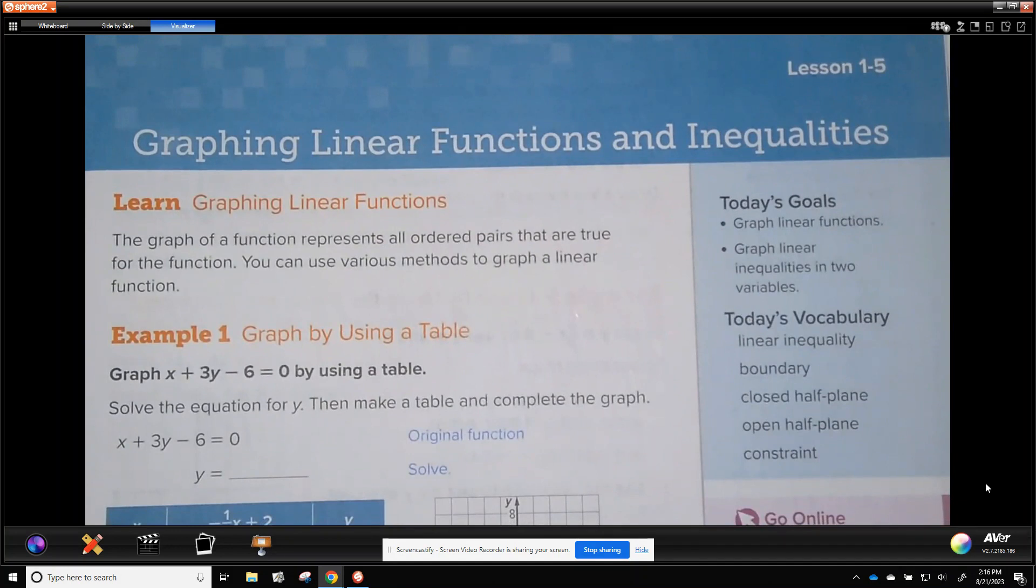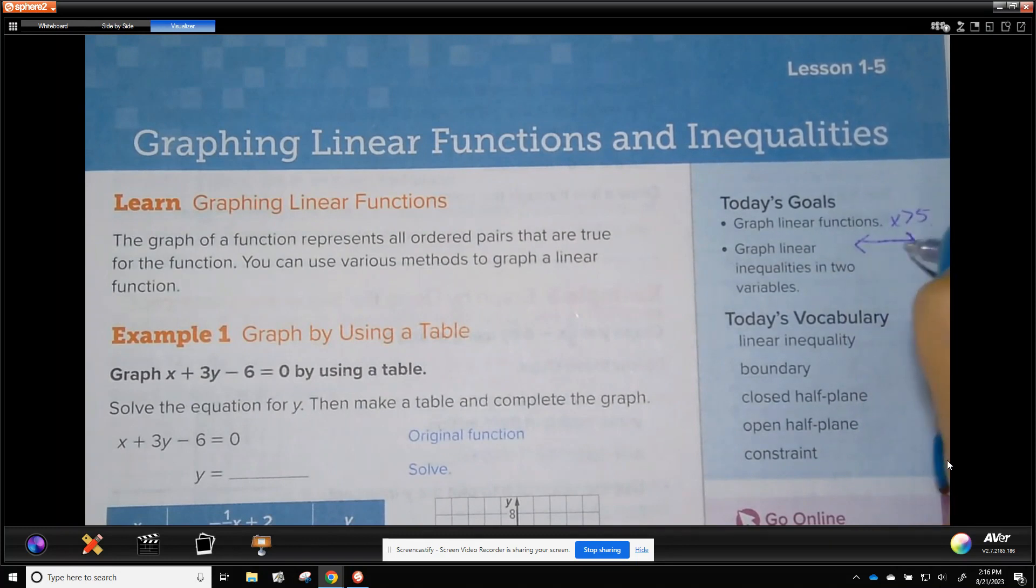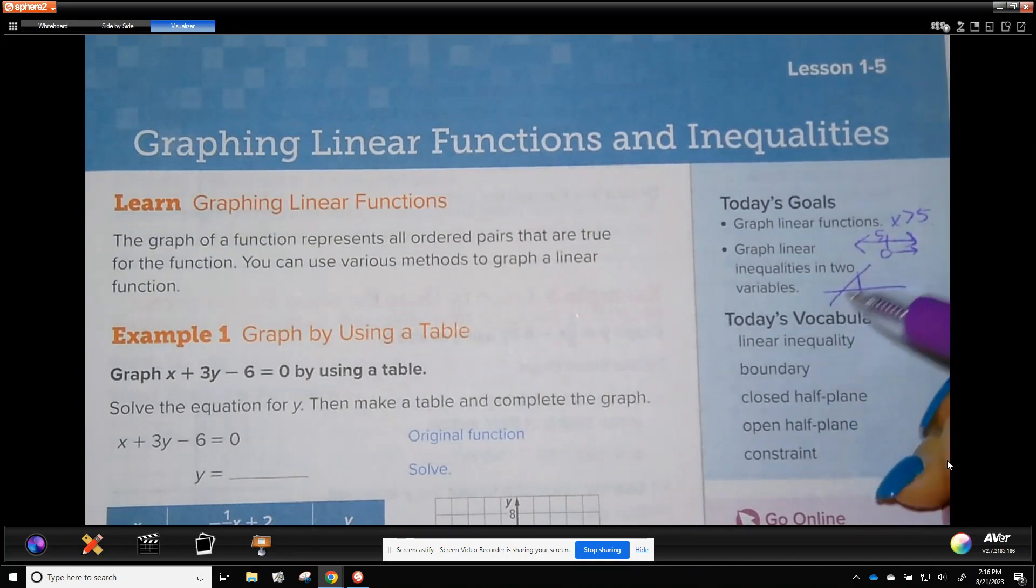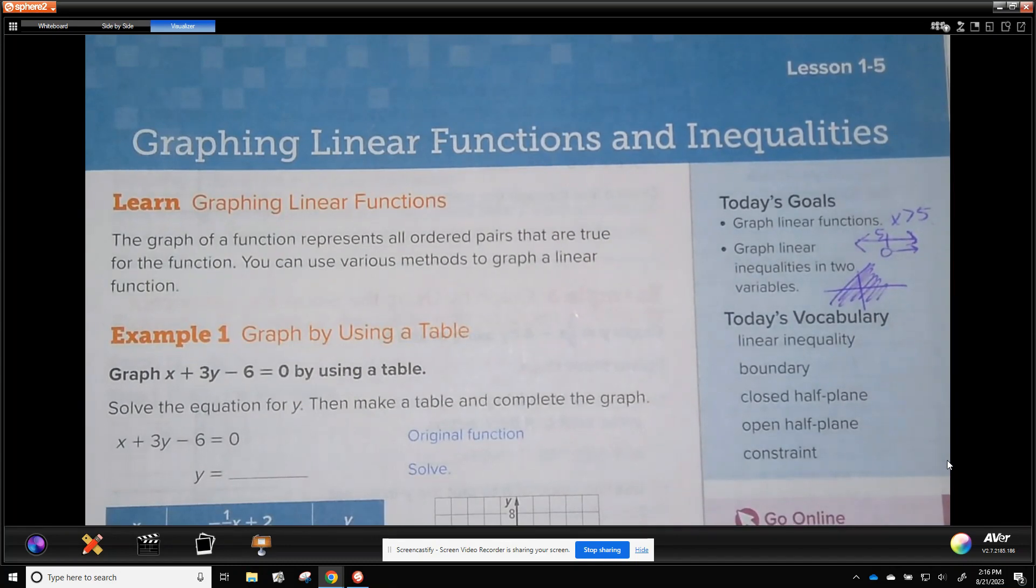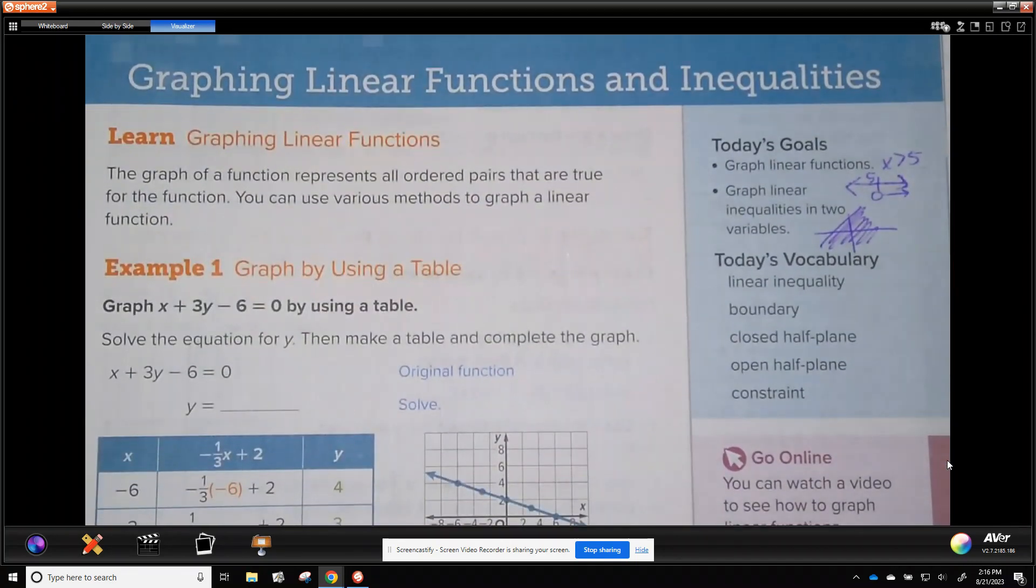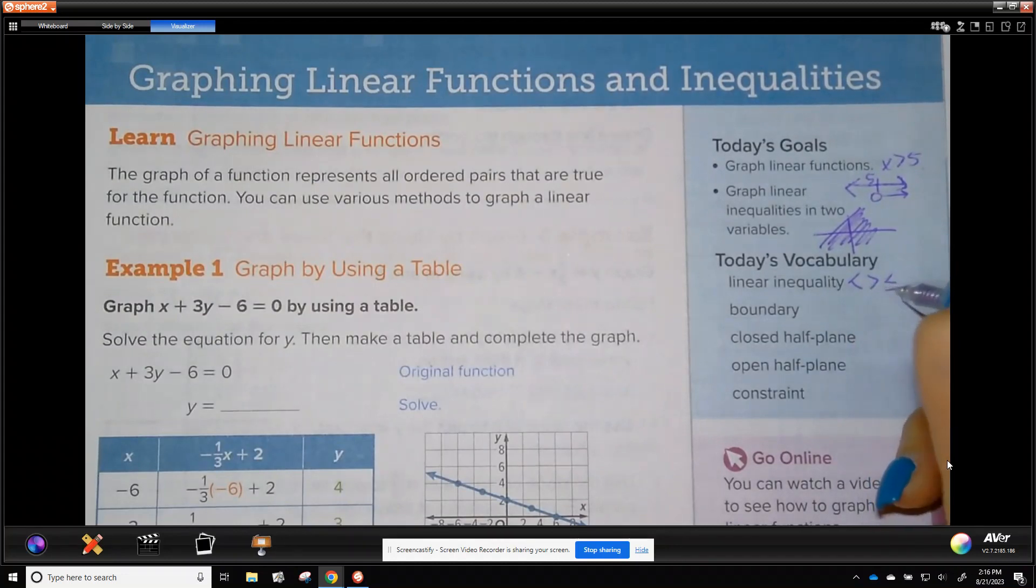So today's goal is you'll graph linear functions, we'll graph inequalities with two variables. When you have an inequality with one variable, that's a number line. Remember, x greater than 5, that's just an open dot at 5, that's one variable. But in two variables, which I'll go through these, we have a line and we have some shading.